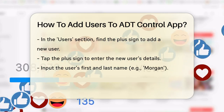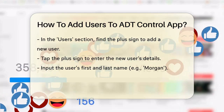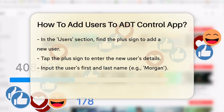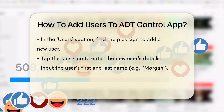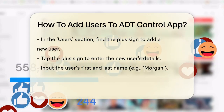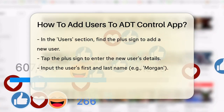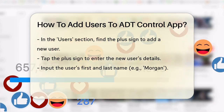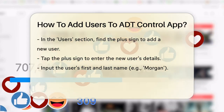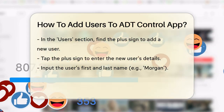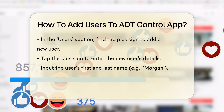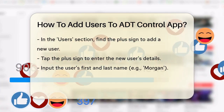Once you're in the Users section, you'll see a plus sign — this is where you add a new user. Tap on the plus sign, and you'll be prompted to enter the user's first and last name. For example, you could enter Morgan as a test name.